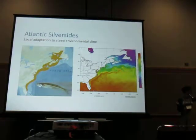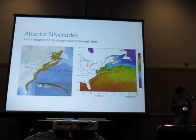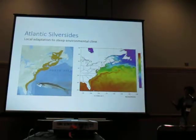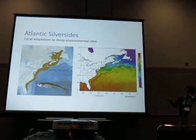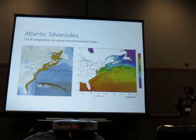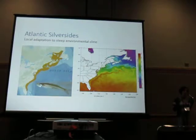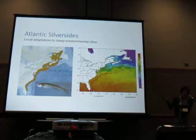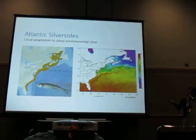Silversides are a really nice system that we can use to explore genomic patterns underlying local adaptation under gene flow. Atlantic silversides are distributed along the West Atlantic coast, from Florida all the way up to the Gulf of St. Lawrence. This distribution spans one of the steepest thermal gradients in the world — right here on the right is sea surface temperature downloaded just a few days ago.